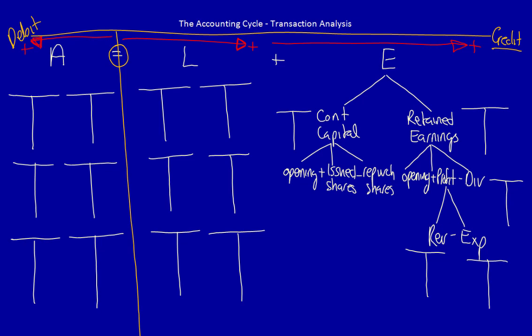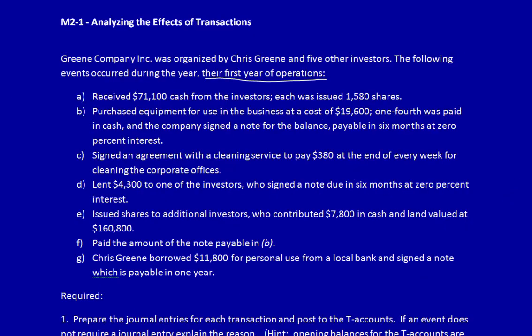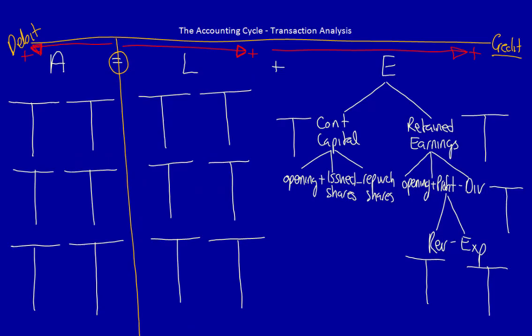Now that we have the accounting equation flowchart, we have everything necessary to analyze the transactions using the steps. Step one is to read the business activity and determine if it's an event or a transaction. Transaction A: receive $71,100 cash from the investors; each was issued 1,580 shares. What did the business get? The business got cash of $71,100.